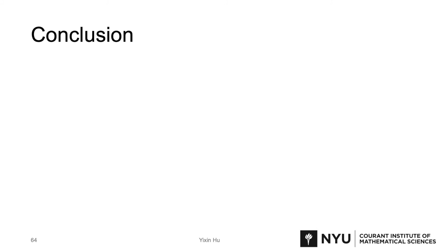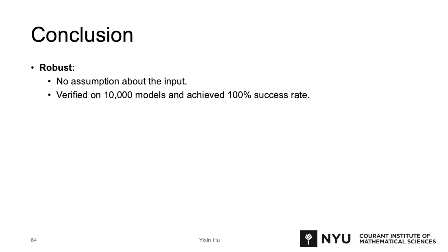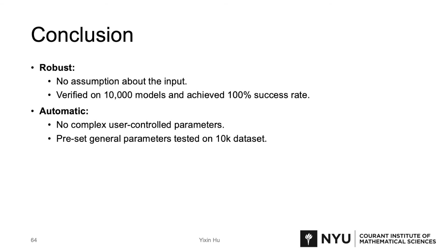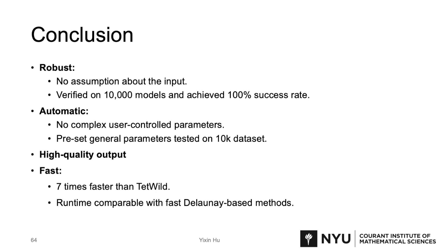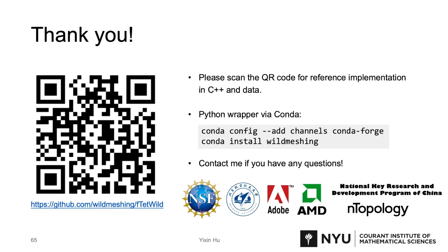Now let me give a short summary. First, fTetWild is robust and verified on 10,000 models. Second, it's fully automatic and there is no complex parameter tuning. Third, fTetWild can produce high-quality output. Finally, it's fast. I would like to thank the NYU HBC team, and also thanks for all kinds of funding that support our work. The source code of fTetWild is public and free to use — you can scan the QR code here. We also have a Python wrapper of fTetWild that you can install via conda.